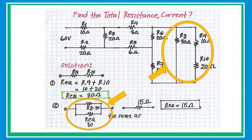Since R9 and R10 combined (30 ohms) are connected in parallel with R8, which is also 30 ohms, and they have the same value, simply take half — which is 15 ohms.